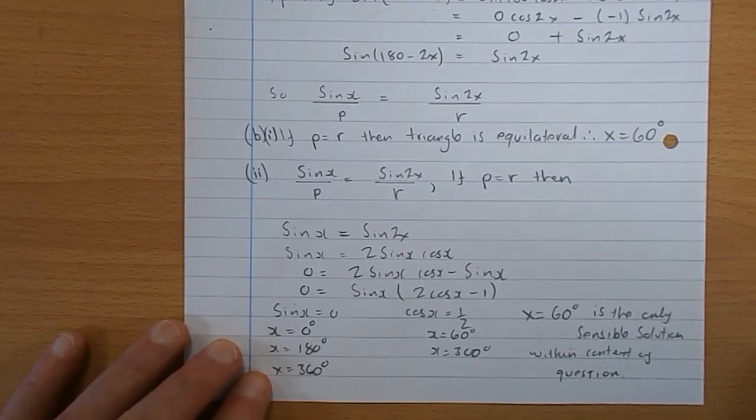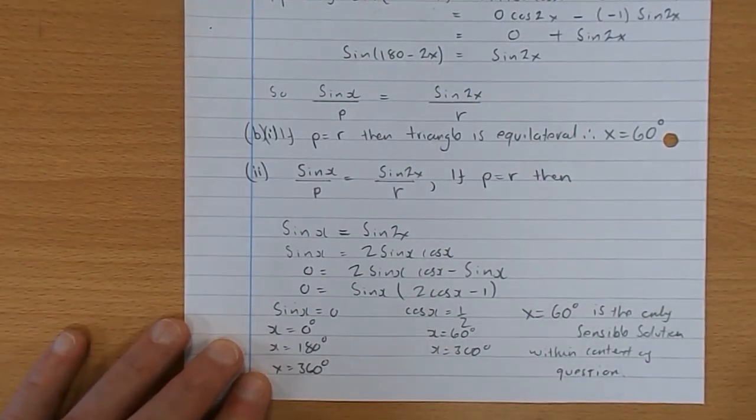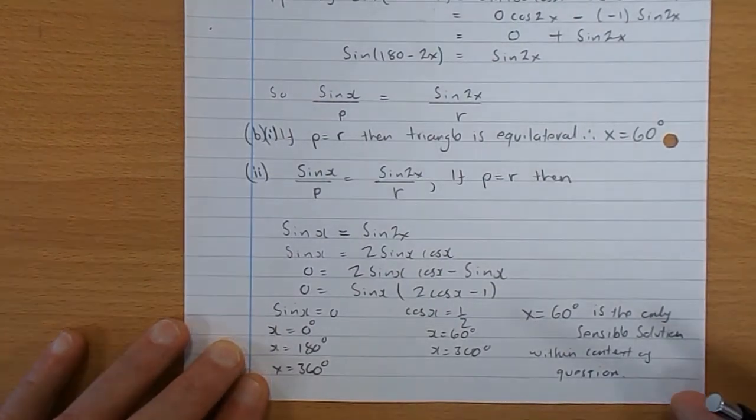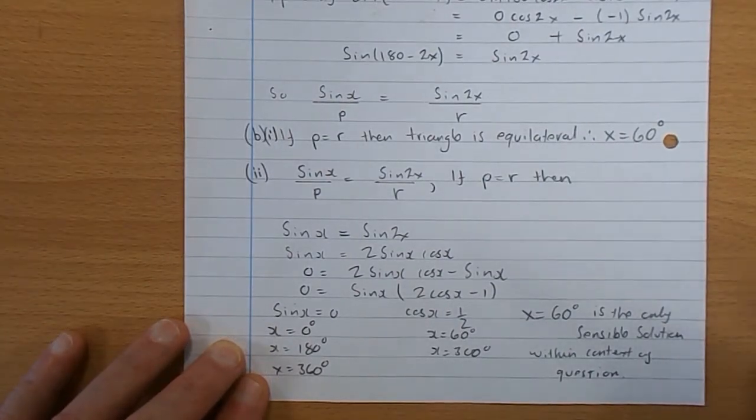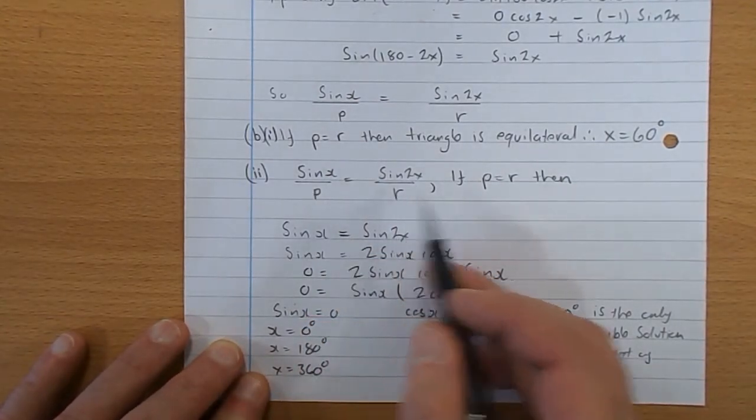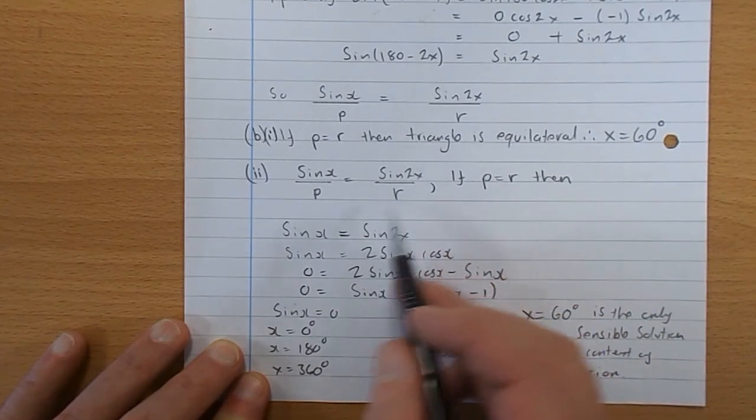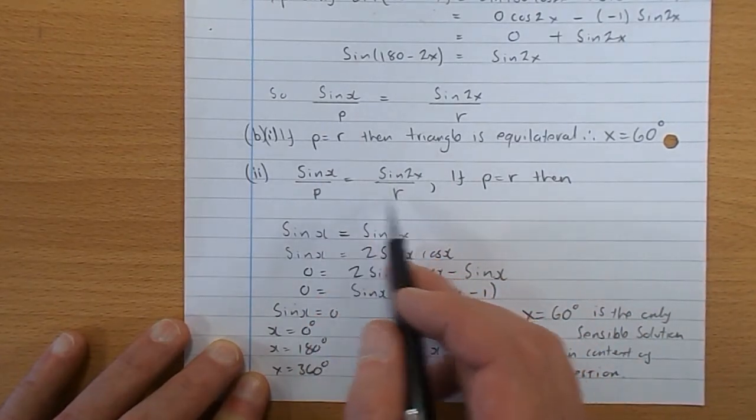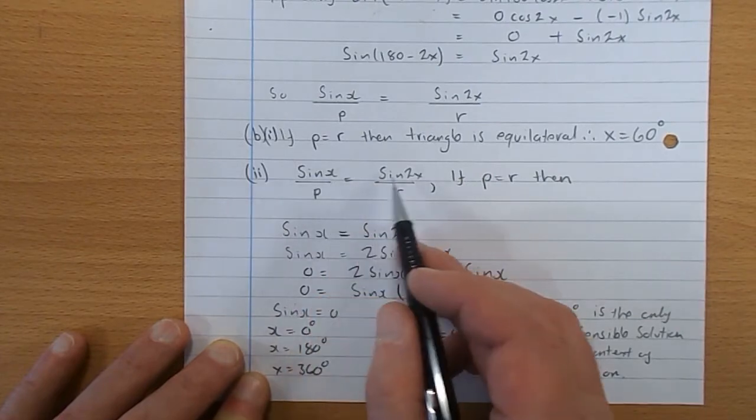And then part B, part 2, using the fact that P is R, solve your equation to justify your stated value of X. So we had sine X over P is sine 2X over R. If P equals R, we can actually just ignore them.